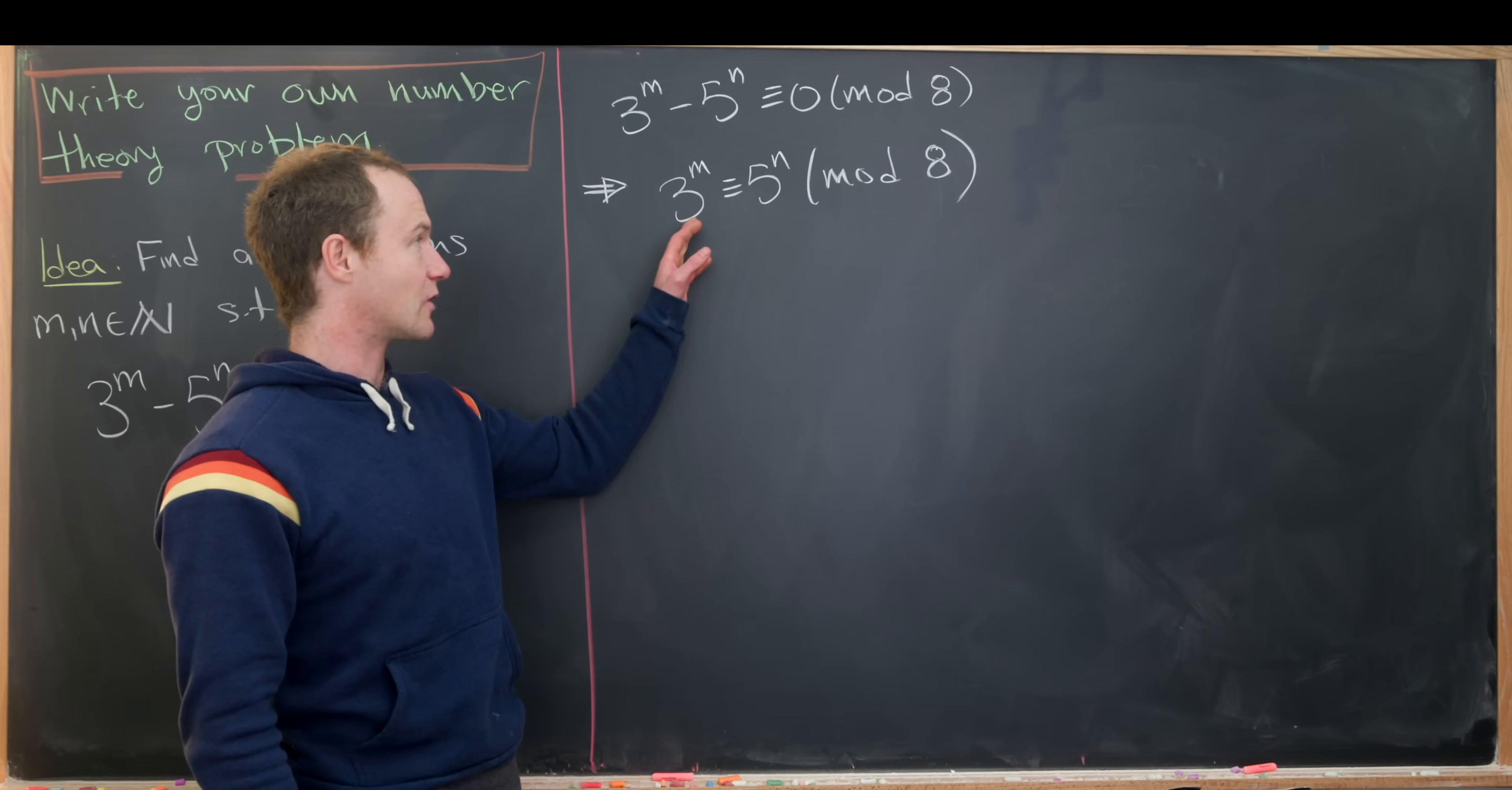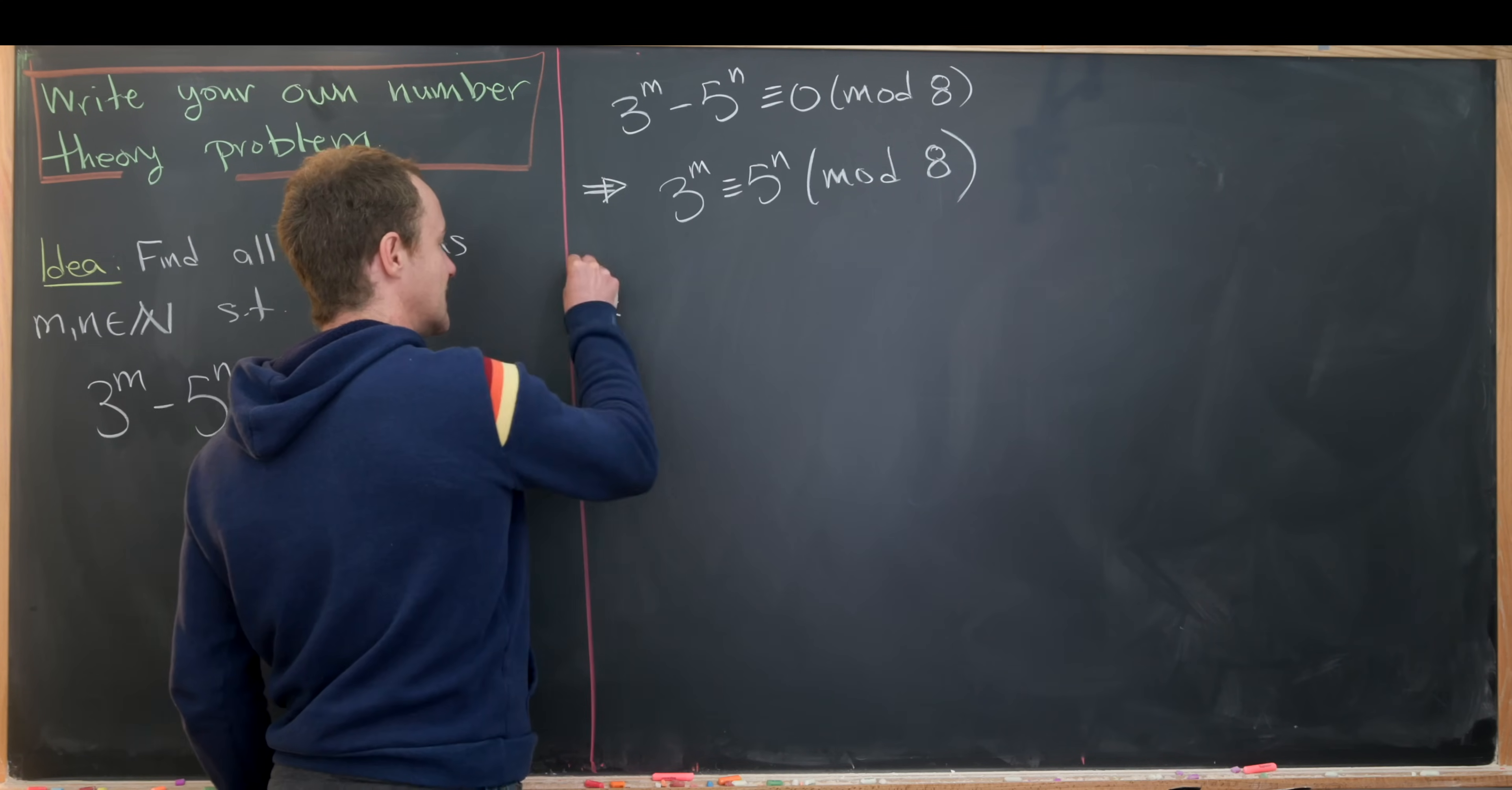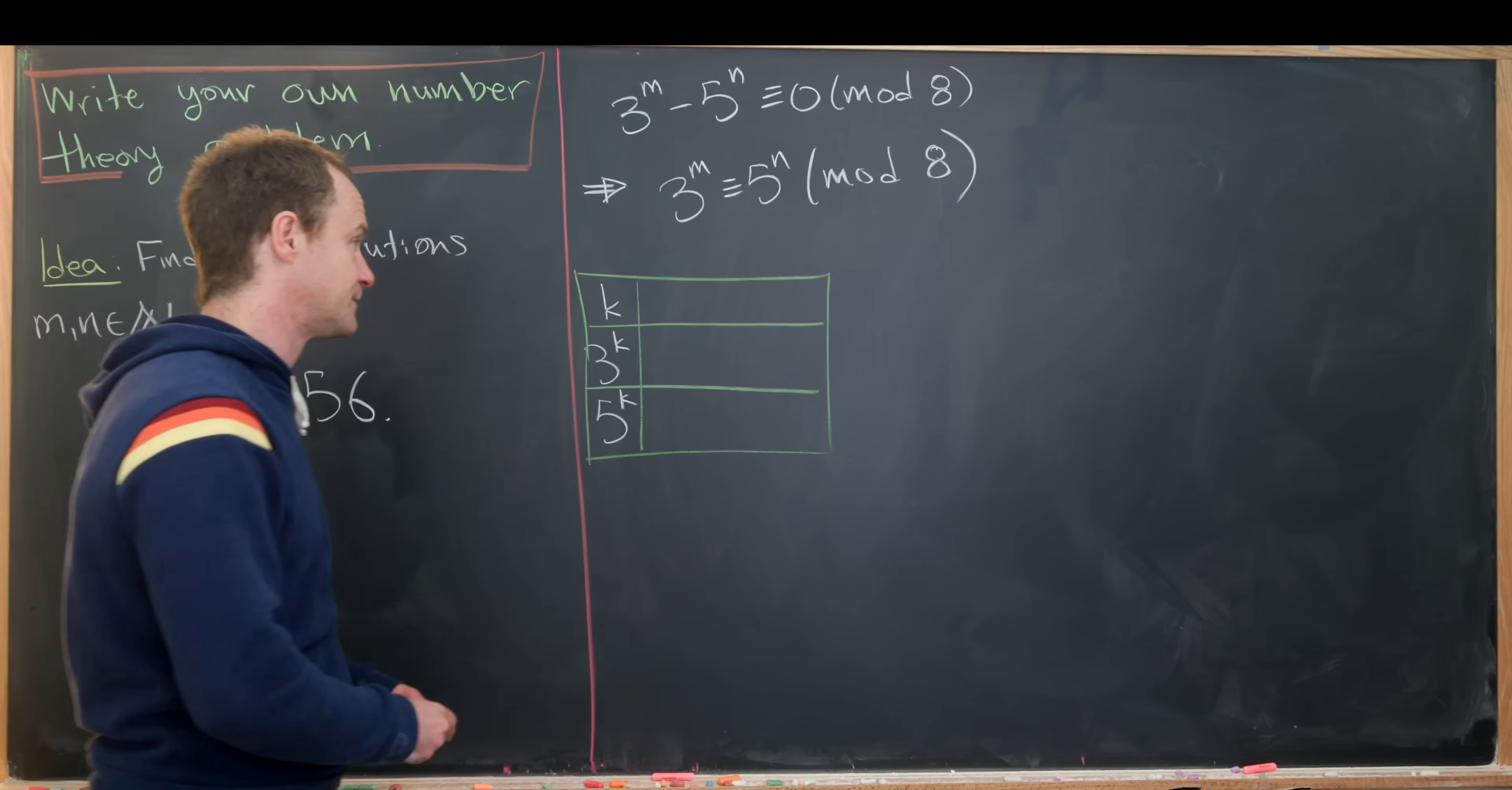Now what we want to do is just look at powers of 3 and powers of 5 mod 8. Let's have our number k here and then we'll look at 3 to the k and 5 to the k, keeping in mind that at each stage we're going to reduce modulo 8. Our chart doesn't need to be that long because we get repetition almost immediately.